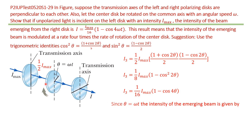Since the second disk rotates with angular speed omega, we substitute theta equal to omega t. Then the final intensity is I equal to I-naught over 16 times one minus cosine 4 omega t.